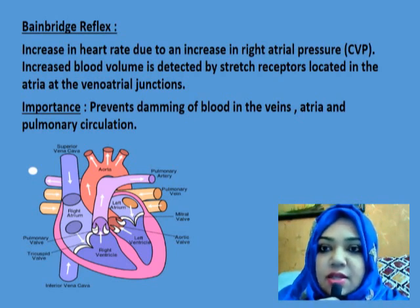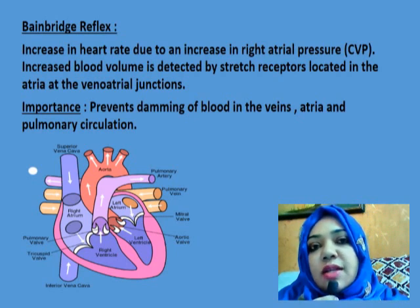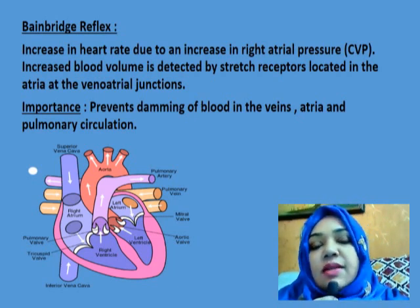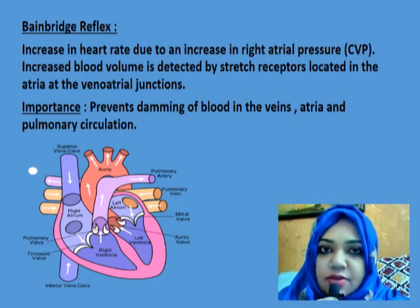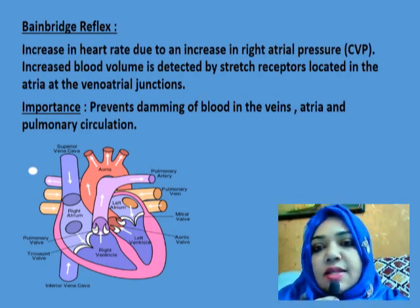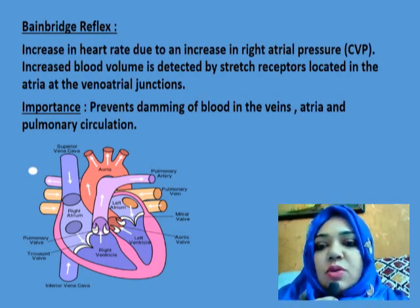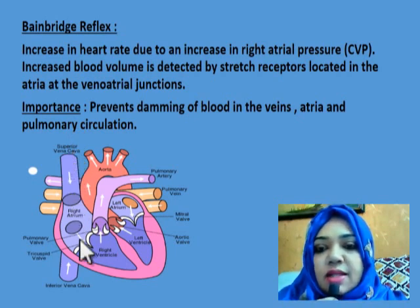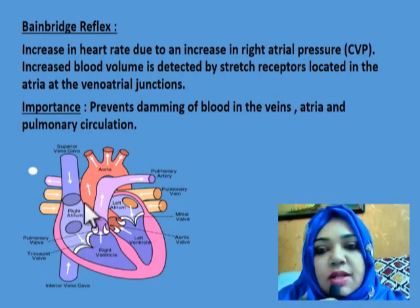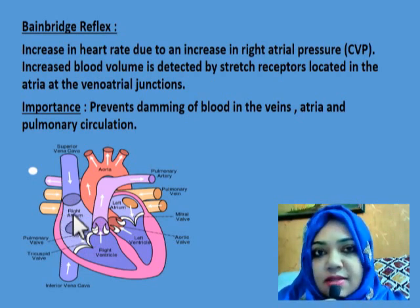The Bainbridge reflex is one of the reflexes that regulate heart rate. By definition, an increase in heart rate due to an increase in right atrial pressure is known as the Bainbridge reflex. When there is increased blood volume and central venous pressure is increased, receptors in the walls of the right atrium send afferent signals to the cardio-accelerator center of the brain, increasing sympathetic activity and heart rate.